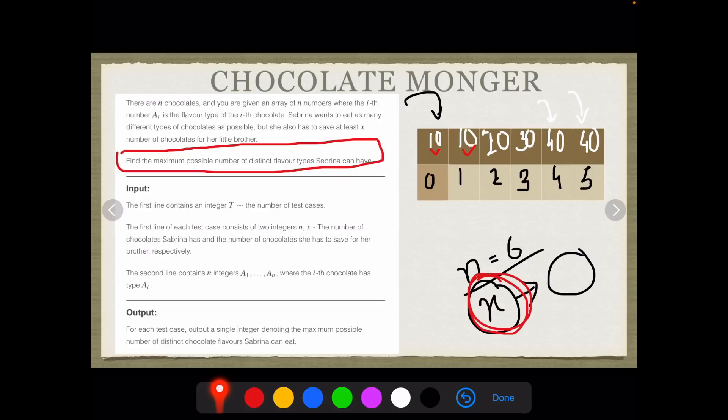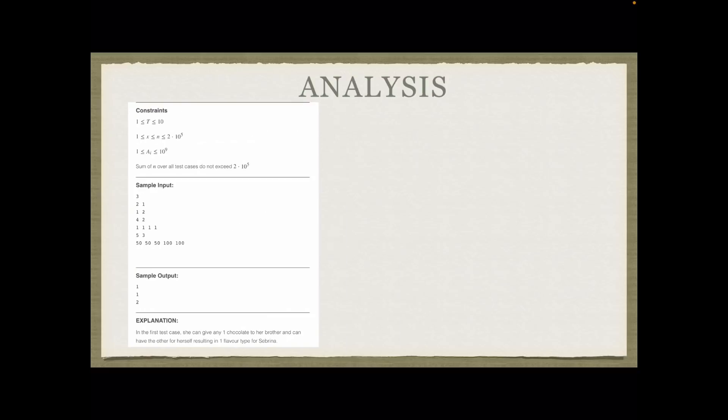Now this is important once again to understand what I just said. As given, you have T number of test cases. Then you have N and X as your second line of input. N is the number of chocolates that you have, and X is the number of chocolates that you've got to save. We'll explain it with the help of an example, don't worry. The second line has N integers A_1 through A_N. These are all my A_1 through A_N integers, and they are the chocolate types. In the output console, you have to print the maximum number of distinct chocolates that Sabrina can eat. Let us look at the analysis of the problem.